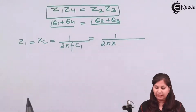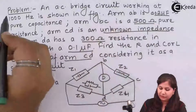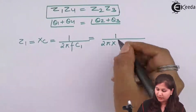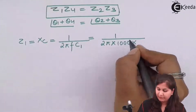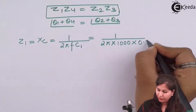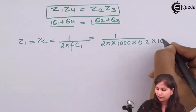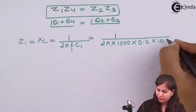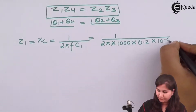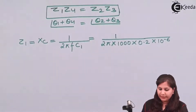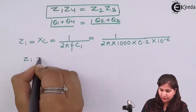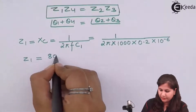The frequency is given as 1000 Hz and the capacitor value is 0.2 microfarad, which we convert to farads as 0.2 × 10⁻⁶. Solving this, we get the value of Z1 as 800 ohms.